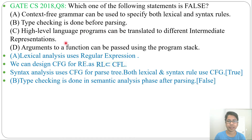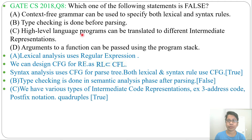Next, option C: a high-level language program can be translated into different intermediate representations. This is true — there are different intermediate representations; three-address code is the most popular, but there is also quadruple and postfix notation. So option C is true.